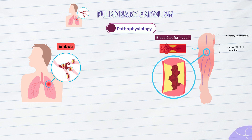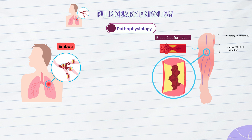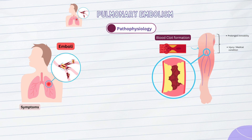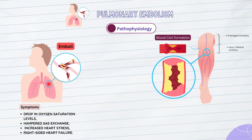The effects of a pulmonary embolism can differ based on the size and number of emboli as well as the person's overall health. The effects of the embolism may be reduced in some circumstances by the body's mechanisms, which may dissolve tiny clots or reroute blood flow. Larger blood clots or many clots, on the other hand, can result in more serious symptoms and challenges. These include a drop in oxygen saturation levels, hampered gas exchange, increased heart stress, and, in extreme circumstances, right-sided heart failure.